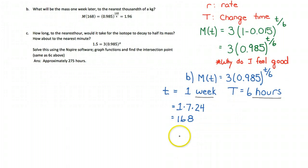Therefore, the mass at 168 hours is equal to 3 times 0.985 to the power of 168 over 6. And then I just get out my trusty calculator here, because as much as I am a fan of doing mental math, this is some mental math I cannot do. So I'm just going to type this in.